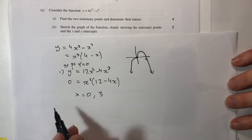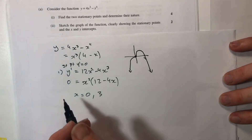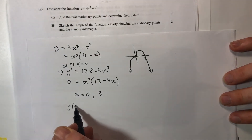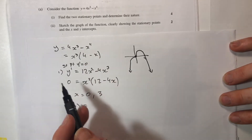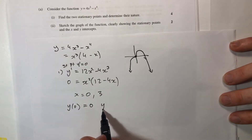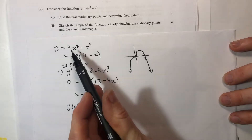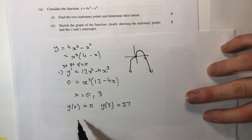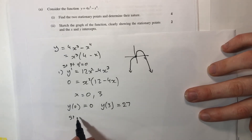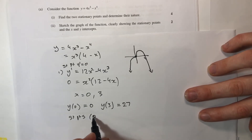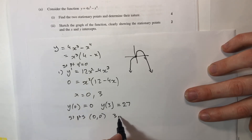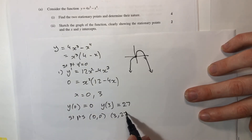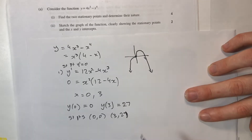These are the x-positions of our stationary points; we also need the y-values. Y at x equals 0 is clearly 0. Y at x equals 3: substituting into the original gives 4 times 3 cubed minus 3 to the 4, which equals 108 minus 81 equals 27. So my stationary points are (0, 0) and (3, 27), which already confirm what I have in my diagram — I'm happy with both results.